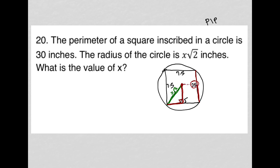Which means when I draw my right triangle here, I actually know that the height of this right triangle is half of 7.5, which makes it 3.75.